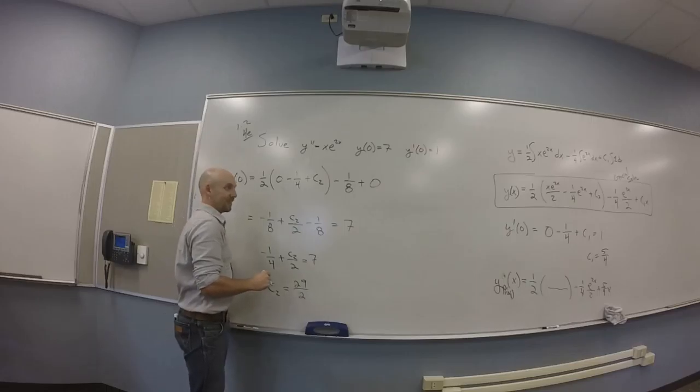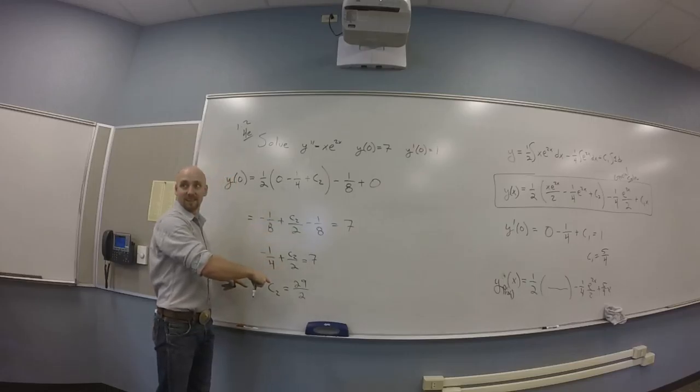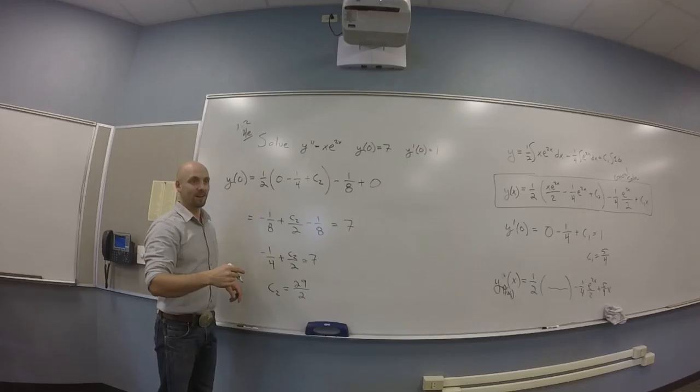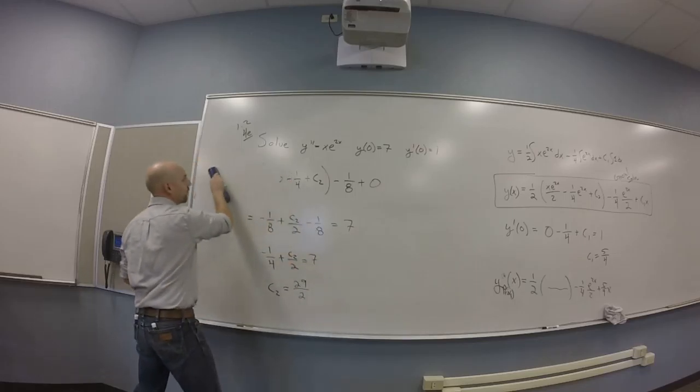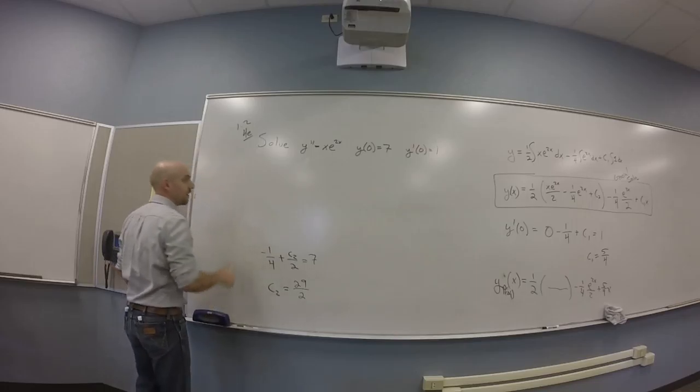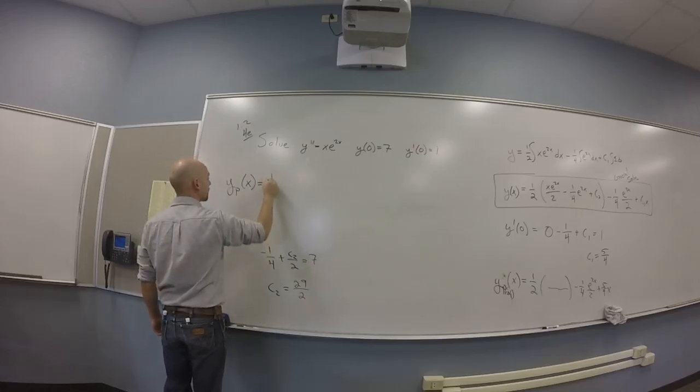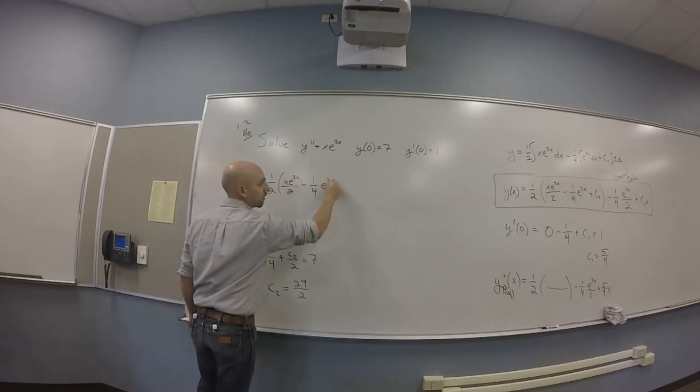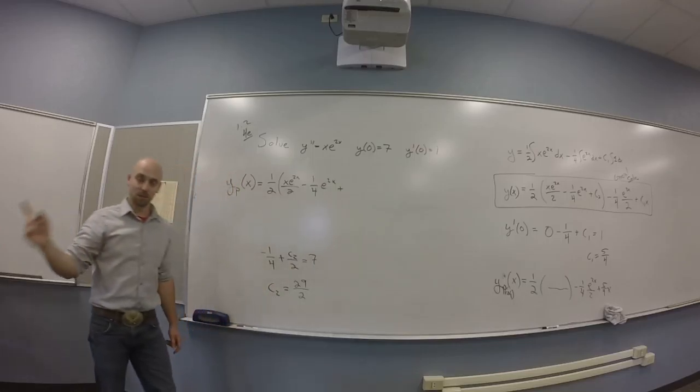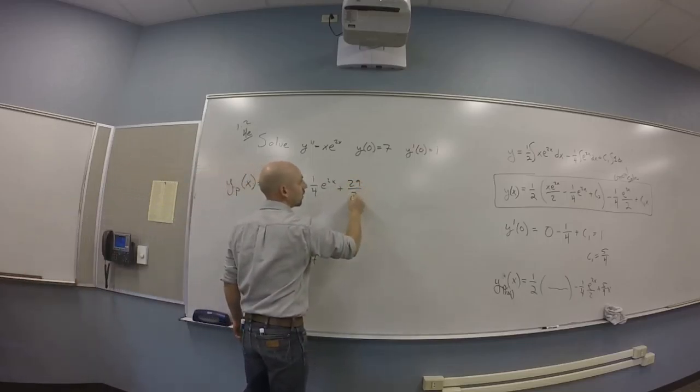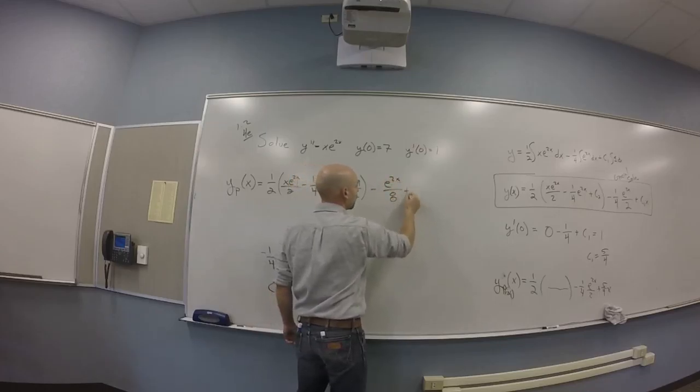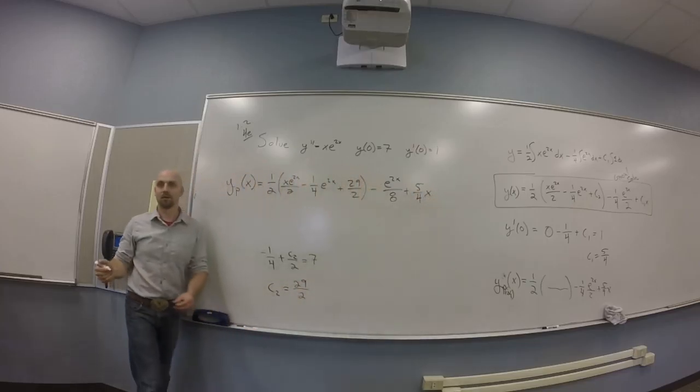So, my YP of X is that whole shebang with five quarters. Right? So, one half XE to the 2X over 2 minus one quarter E to the 2X over 2 plus 5 quarters X. You guys all with me on that? Now, I really should plug zero in, right? Why should I plug zero in? Find the C2. Yeah, I need to find C2. What did they tell me? What am I using? They told me Y of zero is seven.